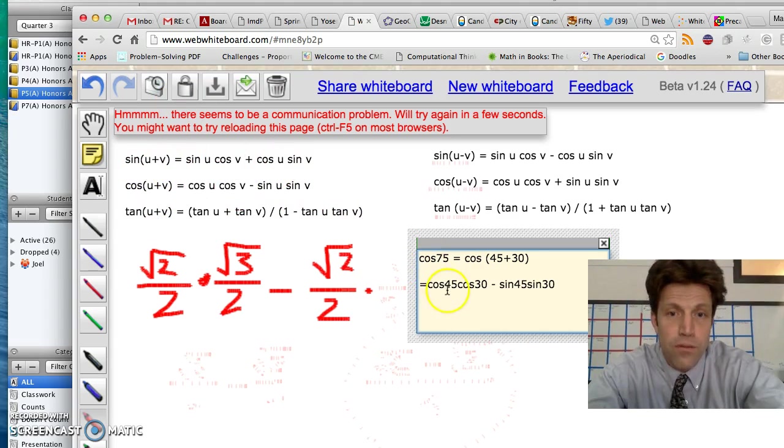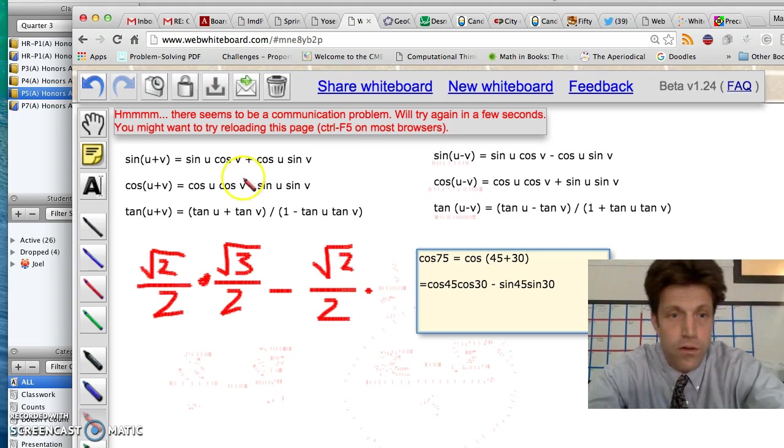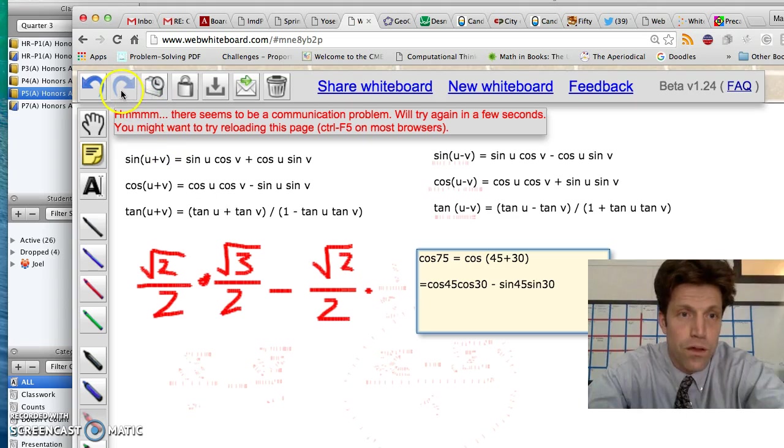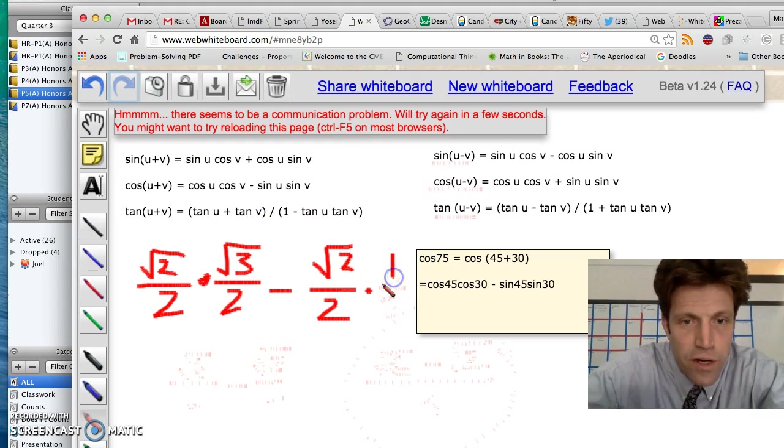And, so then, I start plugging in what I know. Cosine 45, root 2 over 2. Cosine 30, root 3 over 2. Minus sine 45, root 2 over 2. And, it's not going to let me bring it back, huh? Looks like it timed out. There seems to be a communication problem. Alright, so, I'll just write it. Times, it'll be one half. Sin 30 is one half.